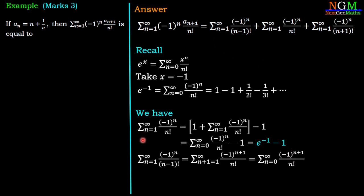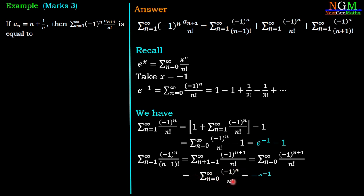Now the first sum: Σ (n=1 to ∞) (-1)^n/(n-1)!. We convert it by replacing n-1 by n, so n-1)! becomes n!, and n is replaced by n+1. The summation becomes Σ (n=0 to ∞) (-1)^{n+1}/n!. Since (-1)^{n+1} = (-1)^n · (-1), the minus factor comes out: -Σ (n=0 to ∞) (-1)^n/n! = -e^{-1}. So this first sum has value -e^{-1}.